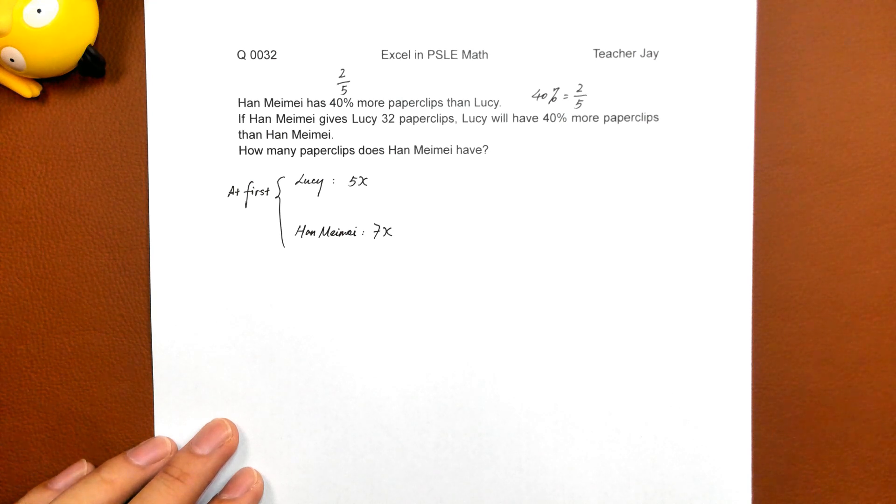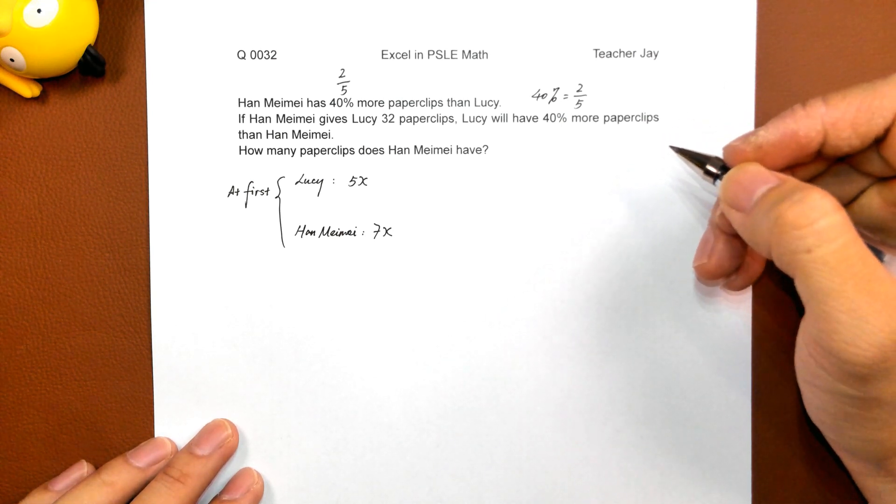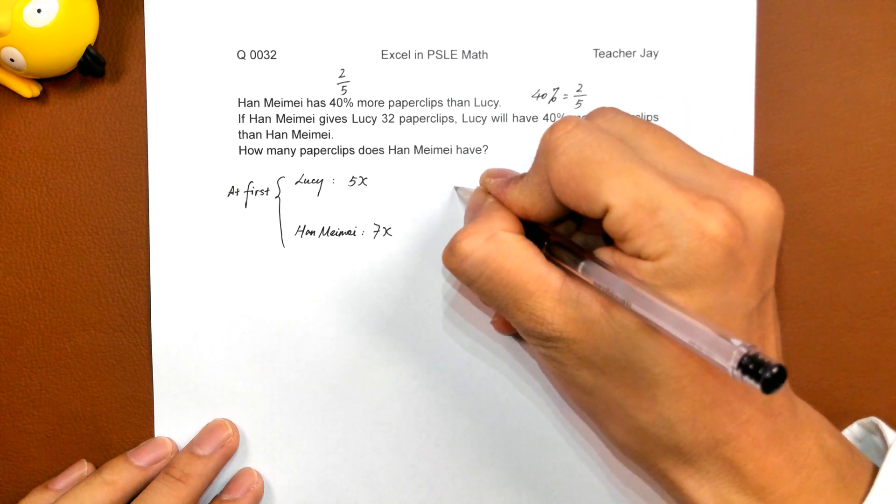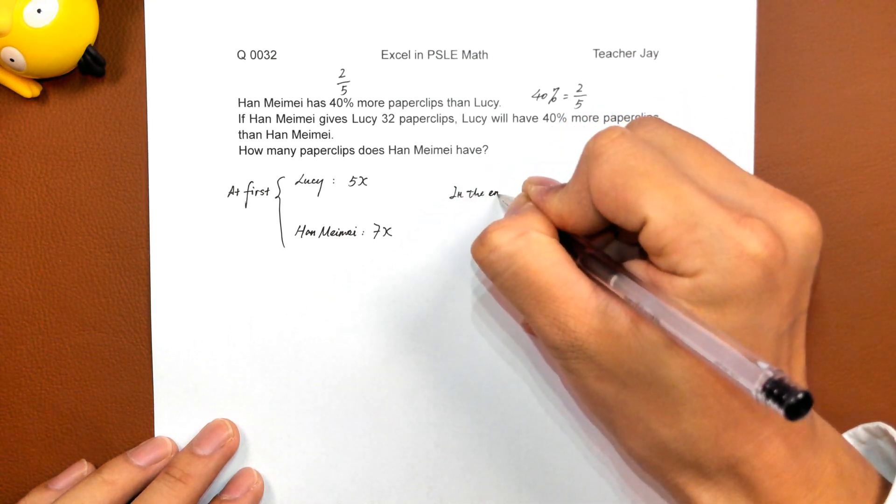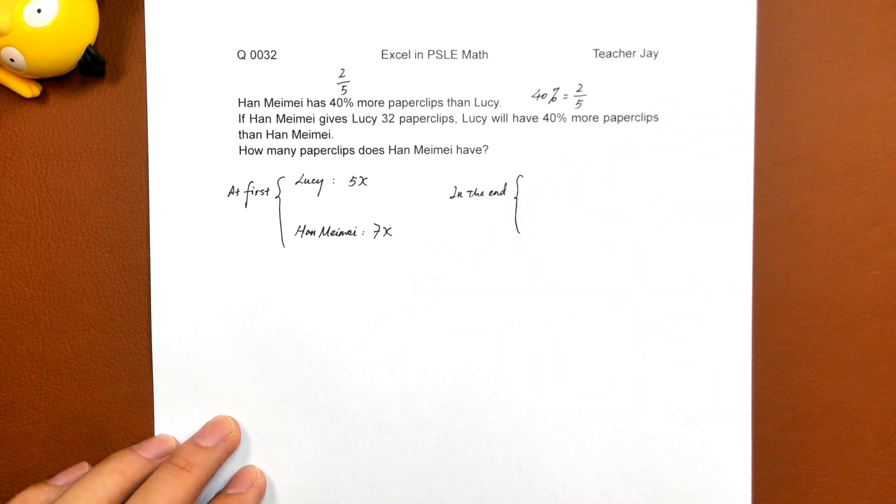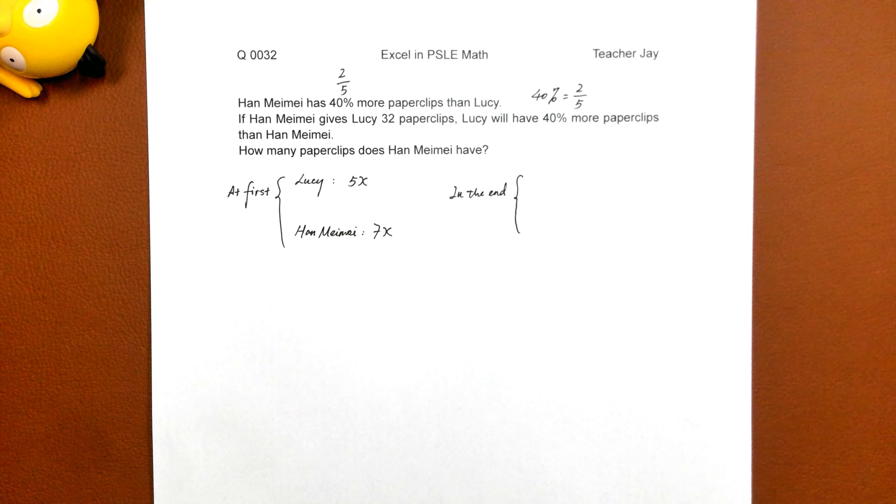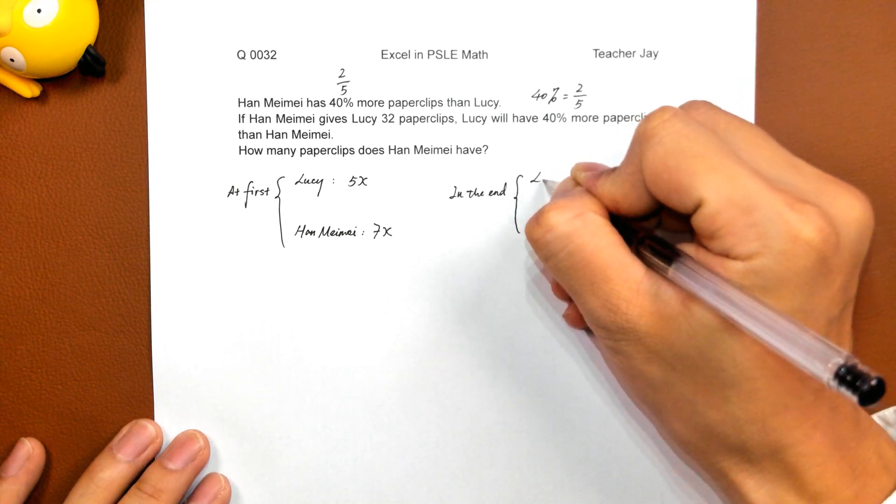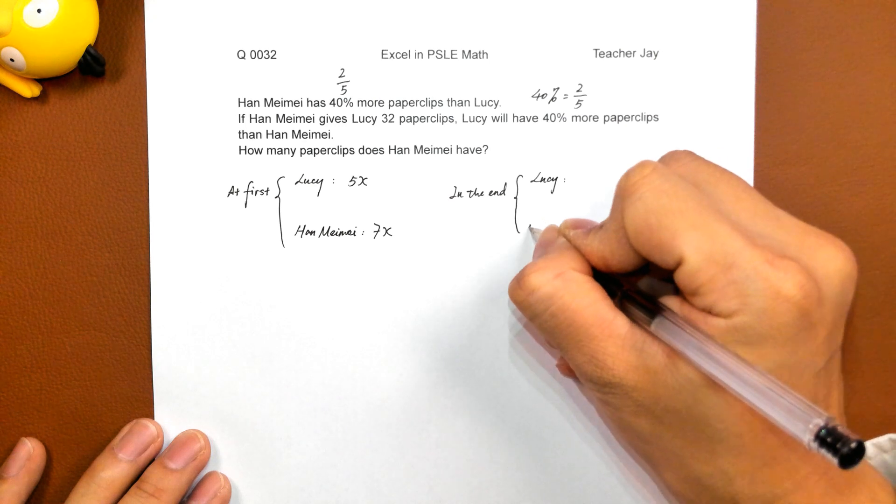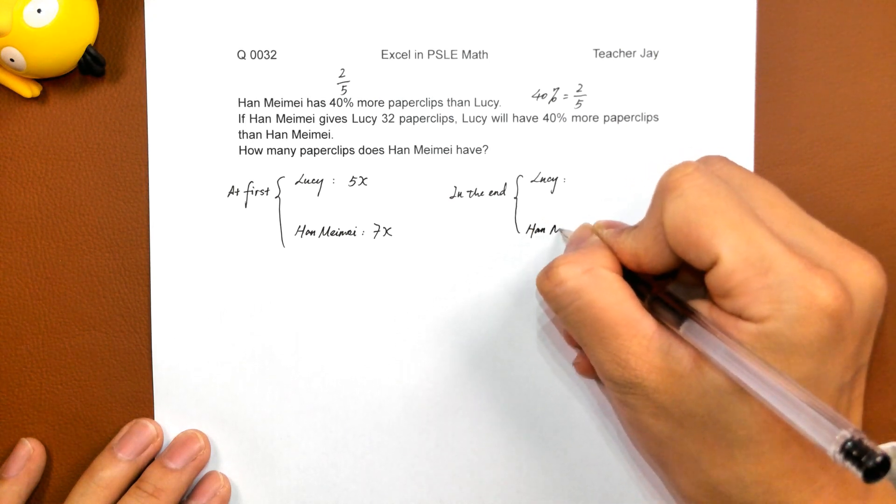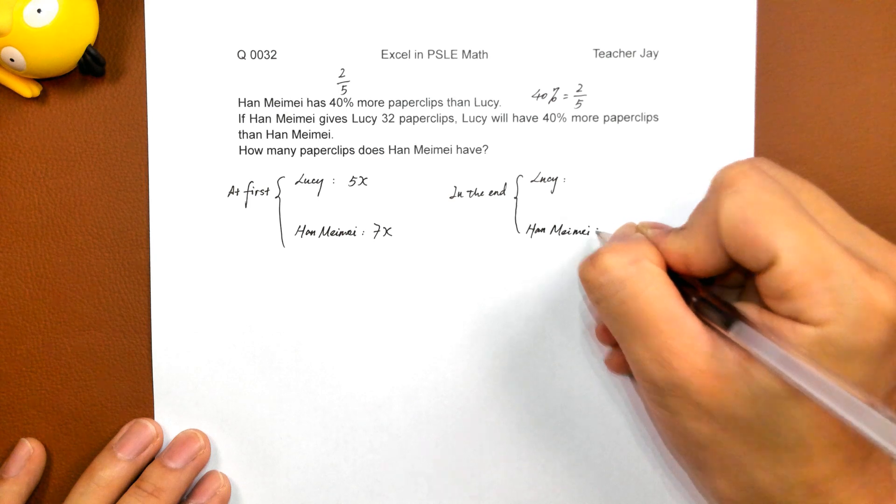And after the exchange, in the end, because no one will eat the paper clips and no paper clips are removed from the system to the outside environment, that means the total number of paper clips remains unchanged. You must fully understand what I mentioned before you can solve this question.